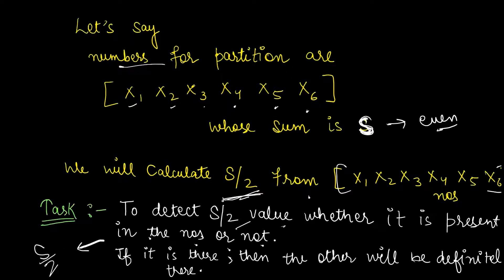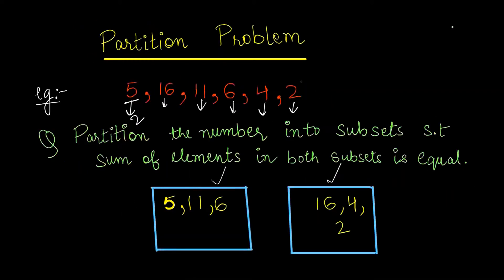Because this S we have already calculated from these numbers only. So if we have S by 2 in one set, then the other will be definitely there. Let's understand this with an example. We'll be taking the same numbers here.